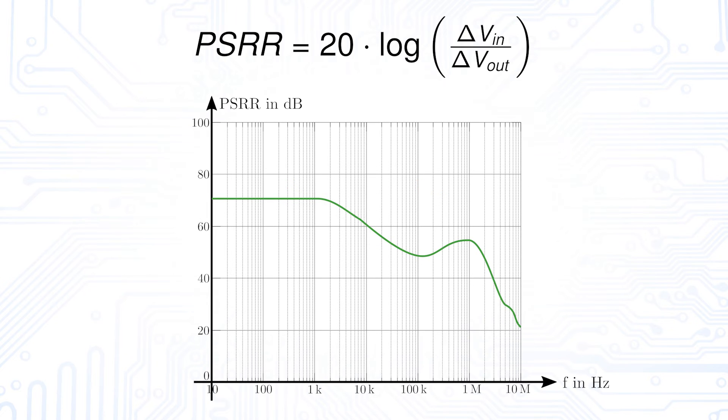Be aware that the suppression is not constant. It has a different value depending on the ripple frequency and is described in a frequency response like this one. On the x-axis the frequency of the ripple in Hertz and on the y-axis the power supply rejection ratio in dB is plotted. For the power supply rejection ratio a high value is desired.